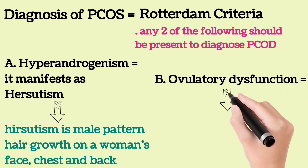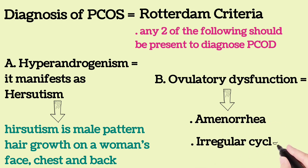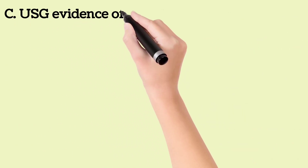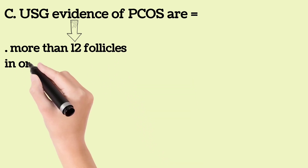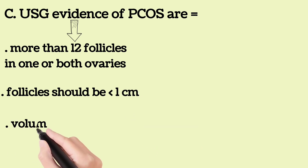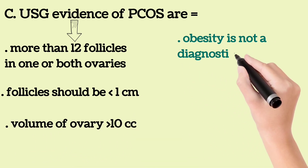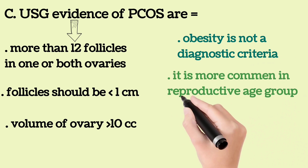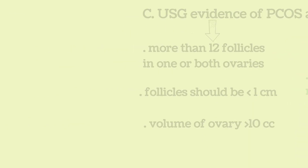Second, ovulatory dysfunction: amenorrhea or irregular cycles. Third, USG evidence of PCOS — more than 12 follicles in one or both ovaries, each follicle less than 10 mm, and volume of the ovary greater than 10 cc. Obesity is not a diagnostic criterion. PCOS is more common in the reproductive age group. You can see the USG image of PCOS.